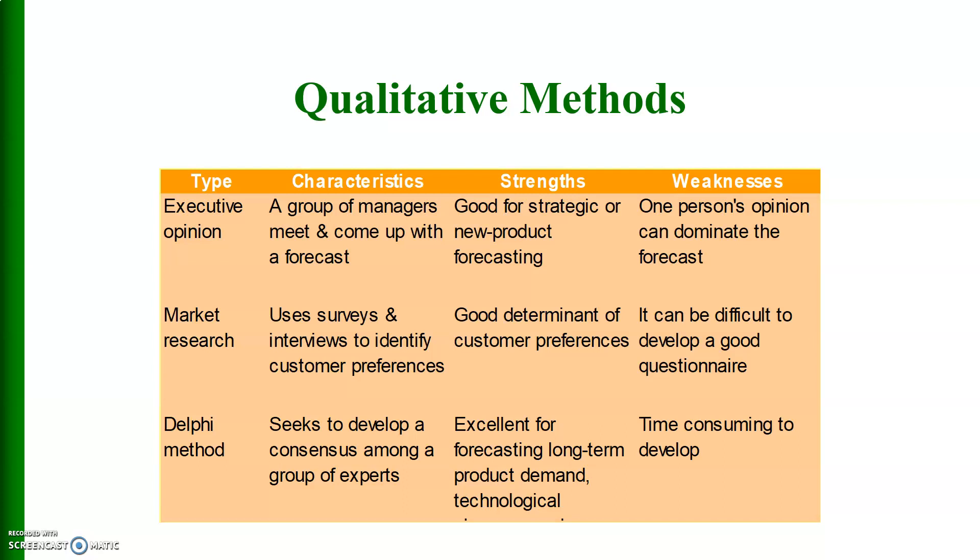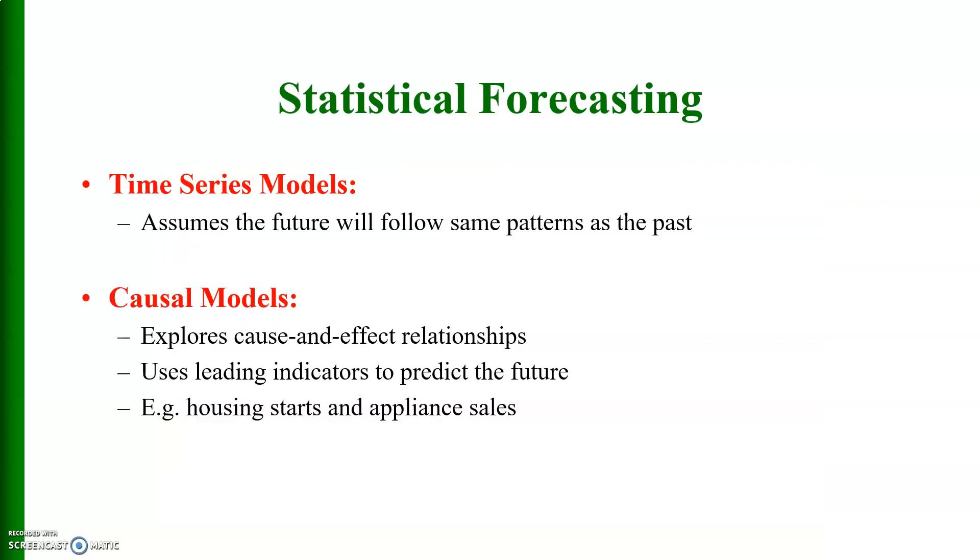And then we have quantitative methods in which forecasts are generated through mathematical or econometric modeling. Here are the examples of qualitative methods: we have three types - executive opinion, market research, and Delphi method. Their characteristics, strengths, and weaknesses are given here.